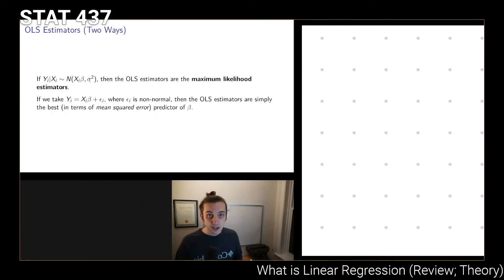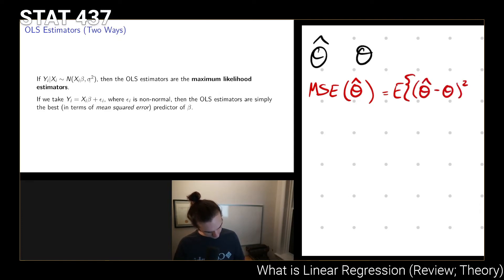So what do we mean by this? Well, if we have an estimator theta hat and theta hat's an estimator for theta, then we say that the mean squared error MSE(theta hat) is given by the expectation of (theta hat - theta)^2 if theta hat's a scalar. And if it's not, then you'll have to use a quadratic form for the vectors.